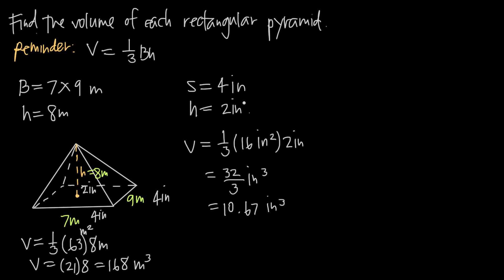Keep in mind that even though we've done volume problems for a rectangular pyramid, you can use the same volume formula for triangular pyramids where the base is a triangle, pentagonal pyramids where the base is a pentagon, or hexagonal pyramids where the base is a hexagon. It doesn't matter what shape the base is — the formula still holds. Find the area of the base, whether it's a hexagon, pentagon, triangle, rectangle, or square, plug that in for B, multiply by the height which is the length of the altitude, then multiply by one third, and you'll get the volume of the pyramid.